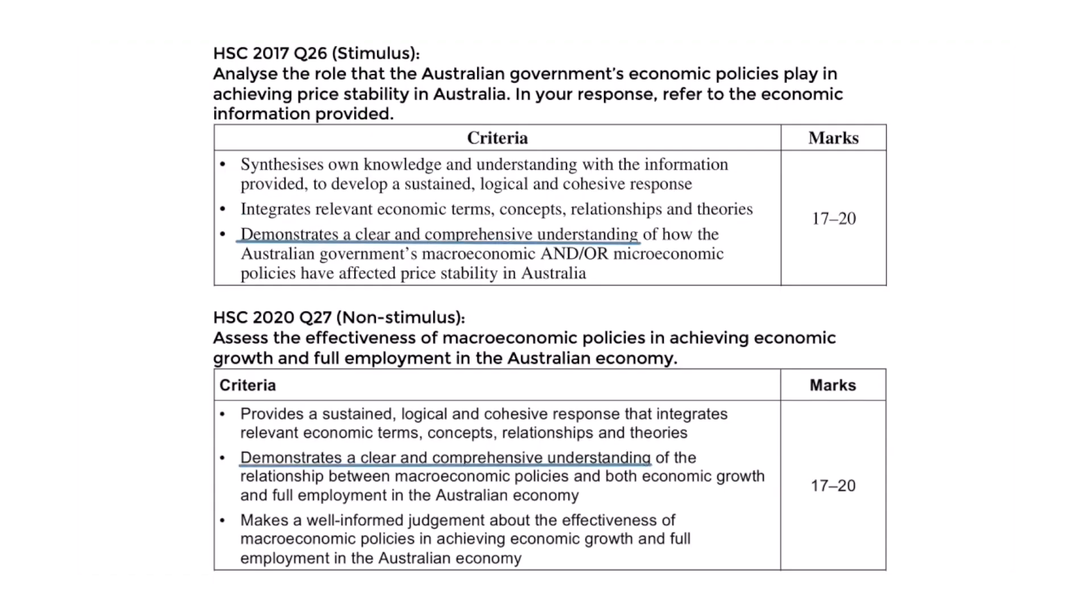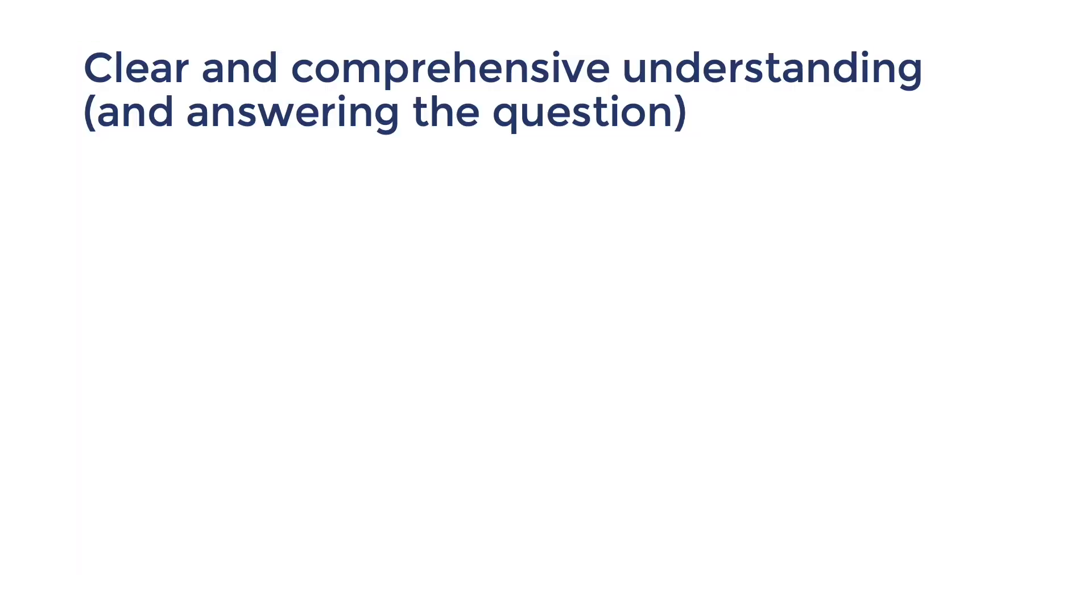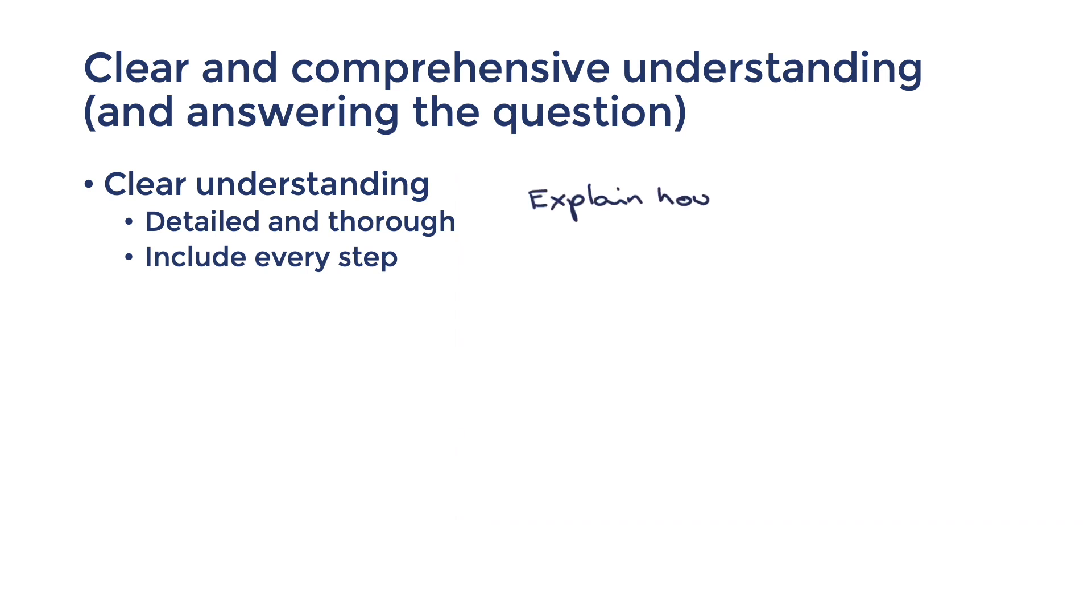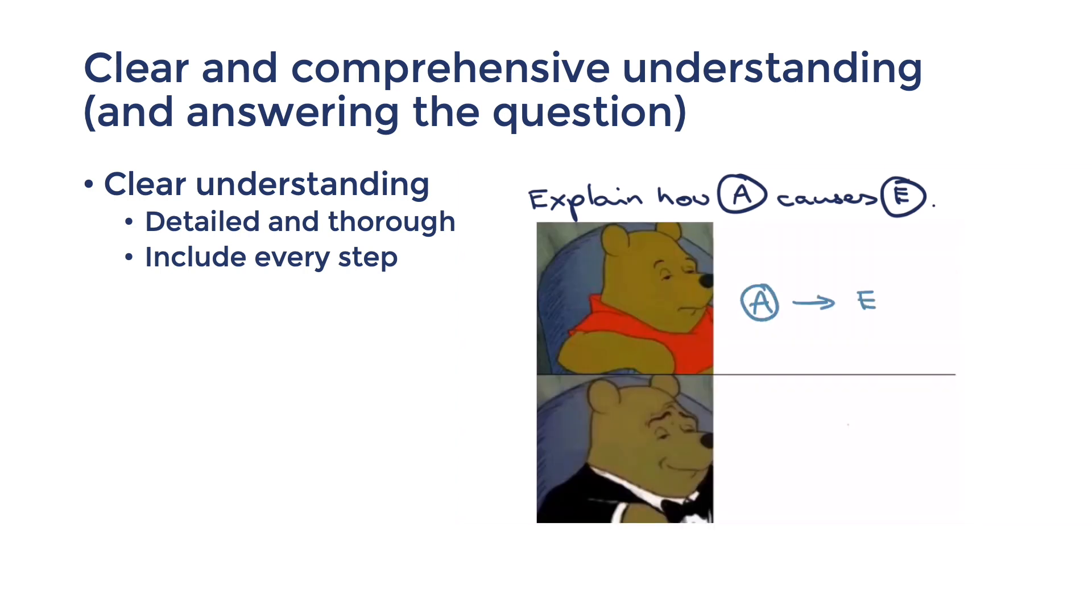This next one is the most important criterion, as it greatly determines which range your response is going to end up in. Clear understanding is displayed when the links you make are detailed and thorough. A link that skips steps will be criticized as general and unclear, as the marker is left asking how or why would this happen? For example, if the exam asked to explain how A causes E and you simply said, A has a positive correlation with E, that would show a limited understanding as the link is left unclear.